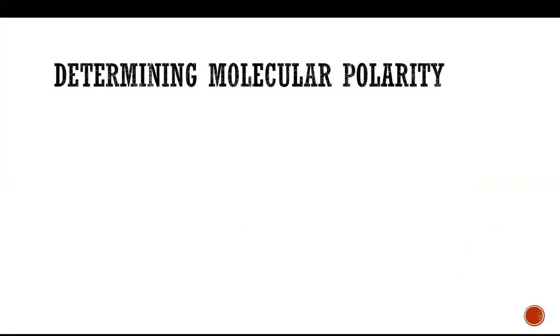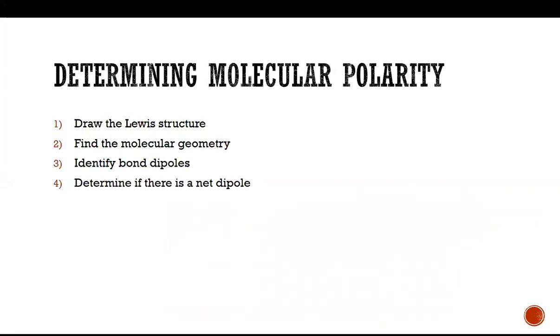So it's a simple four-step process to determine if a molecule is polar or not. First thing you want to do is draw out the Lewis structure, then determine what the molecular geometry is. The third step is to identify if there are bond dipoles. Finally, you need to add together these bond dipoles to see if there's a net dipole moment.